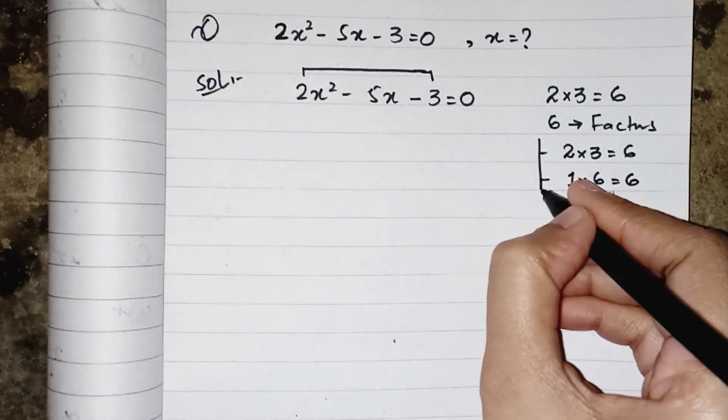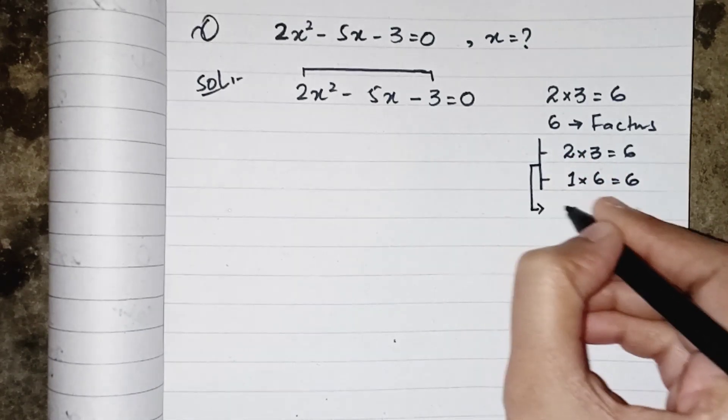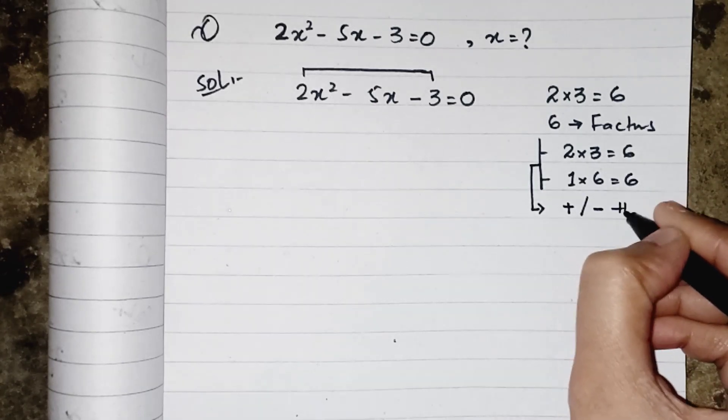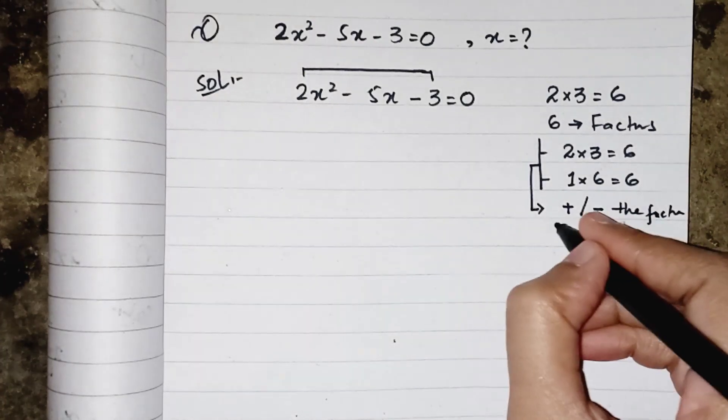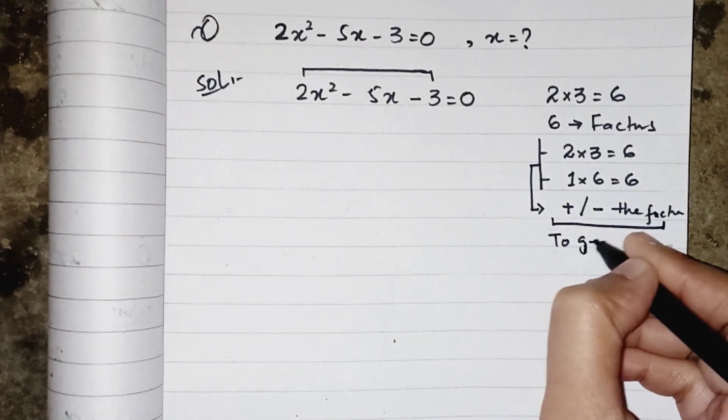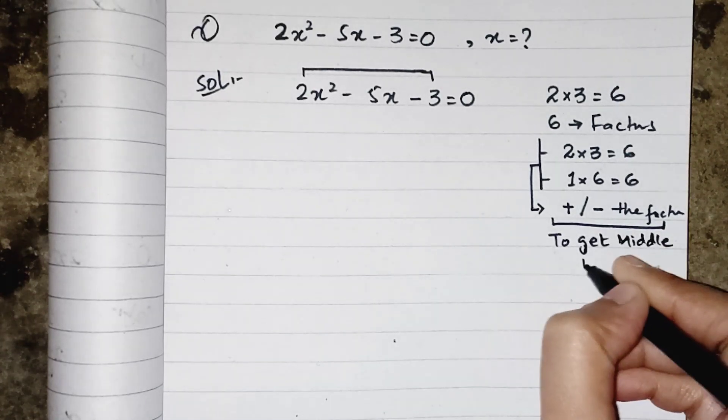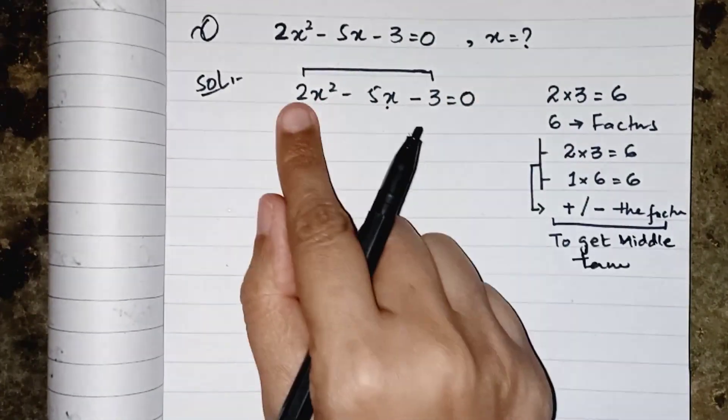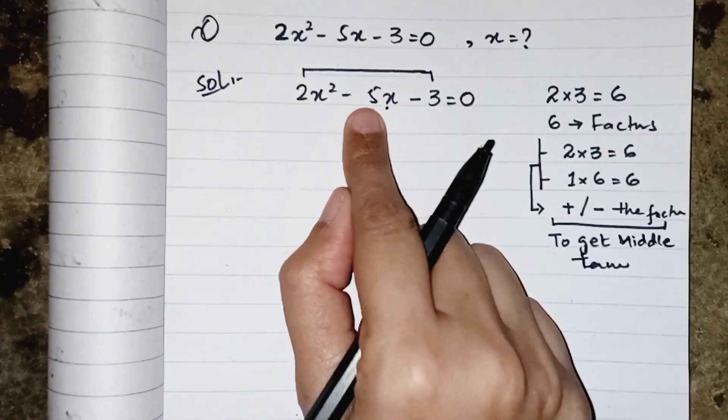Now what we have to do with this factors? We have to add or subtract the factors, but why? To get middle term. What middle term? Middle term is this one, because we were multiplying the coefficient of first and last term, so the remaining term will be the middle term of the quadratic equation.